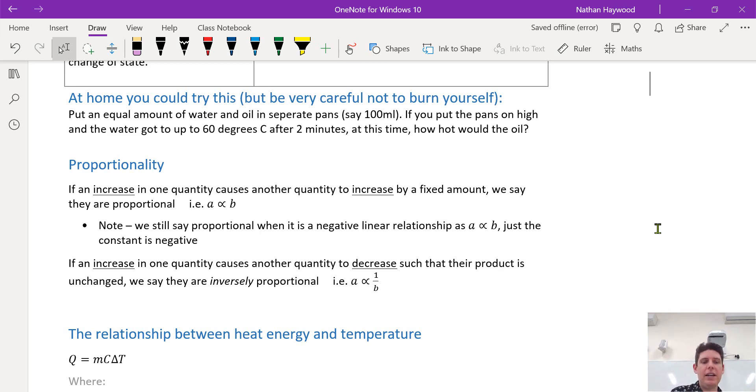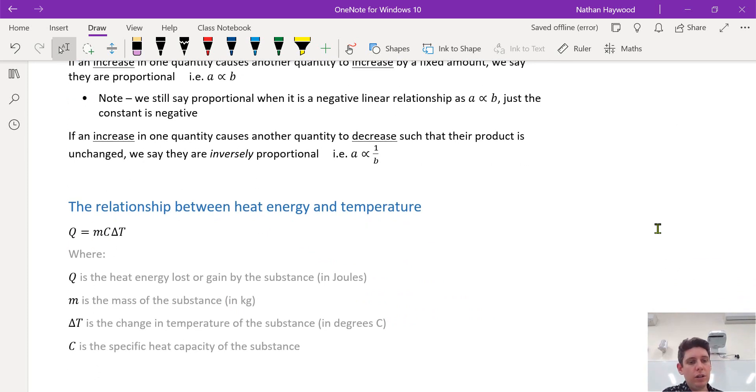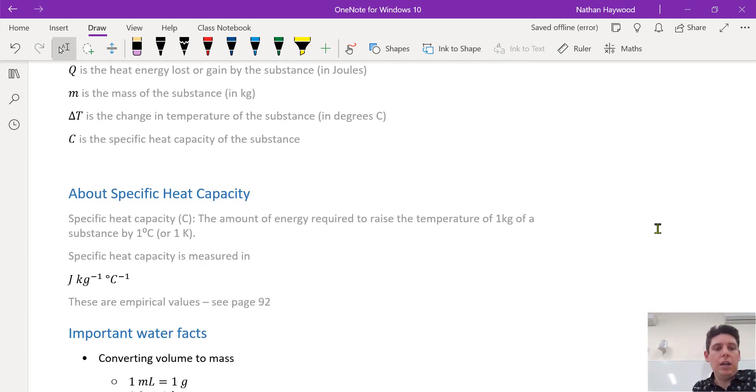And you can see this in this formula. Q, the energy lost or gained equals the mass times the specific heat capacity, C times the change in temperature. And all of these, hopefully you're familiar with units of measurement. Q is in joules, mass is in kilograms, change in temperature is in degrees Celsius, and C is the specific heat capacity.